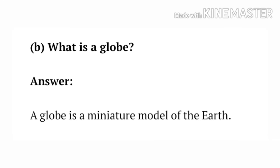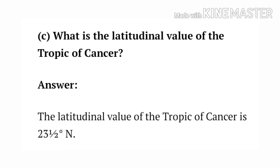Question number B: What is a globe? Answer: A globe is a miniature model of the earth. Question number C: What is the latitudinal value of the Tropic of Cancer? Answer: The latitudinal value of the Tropic of Cancer is 23 and a half degrees north.